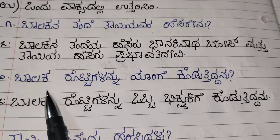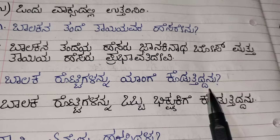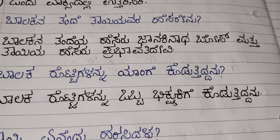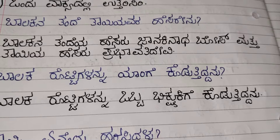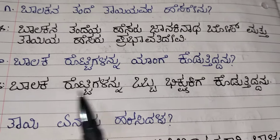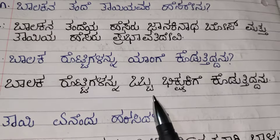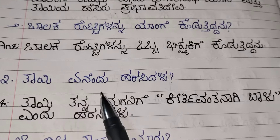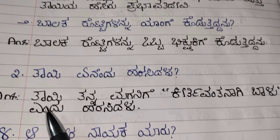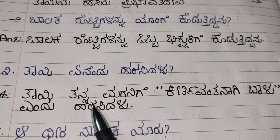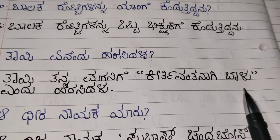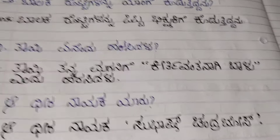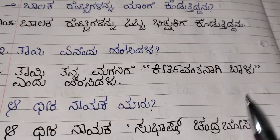Second one: Balaka rottigalannu yalli ge koduthi dhanu — to whom was the boy giving the rotis? He was giving it to the beggar. Balaka rottigalannu obbha bhikshuki ge koduthi dhanu. Next one: Taeyi yeenendu harisidalu. Answer: Taeyi tannamagani ge kheerthivantanagi balu yeendu harisidalu. She blessed her son by saying kheerthivantanagi balu.